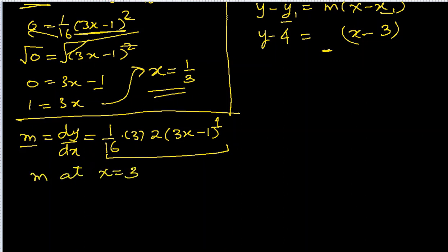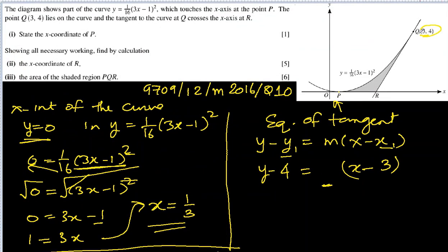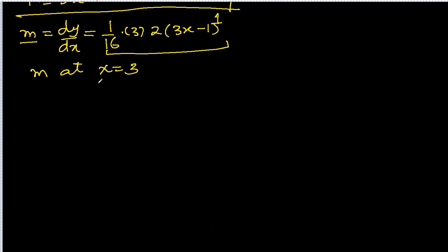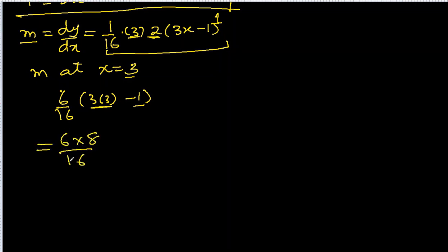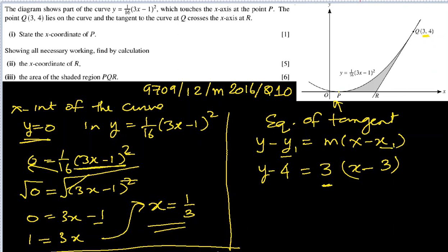This is the general gradient at any point on the curve, but we want the gradient at x = 3, since the tangent touches the curve at point (3, 4). Substituting x = 3: (6/16)(3·3 − 1) = (6/16)(8) = 48/16. Cancelling gives m = 3. We go back to the tangent equation and write m = 3.